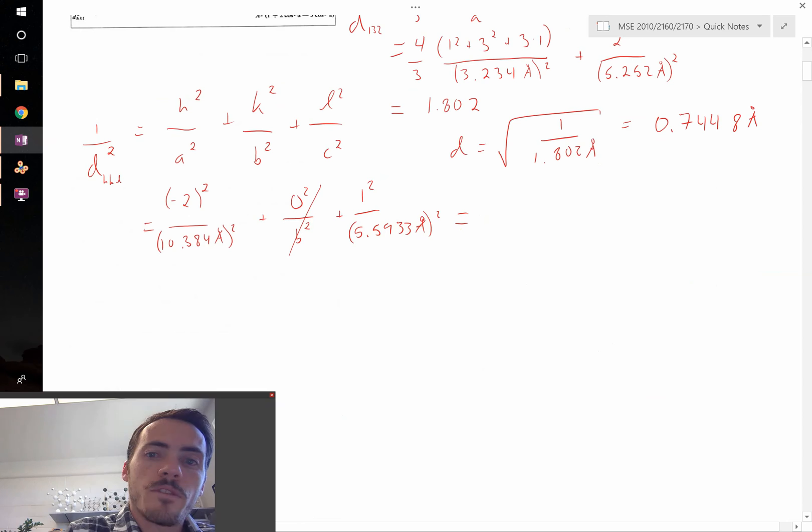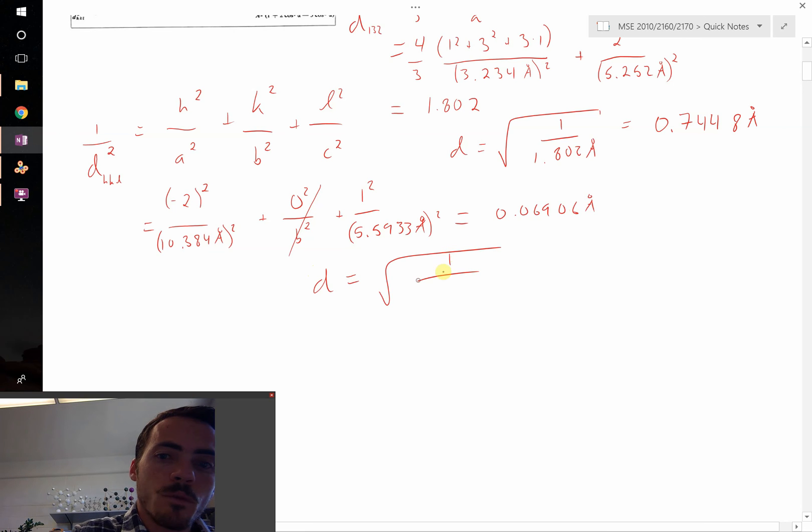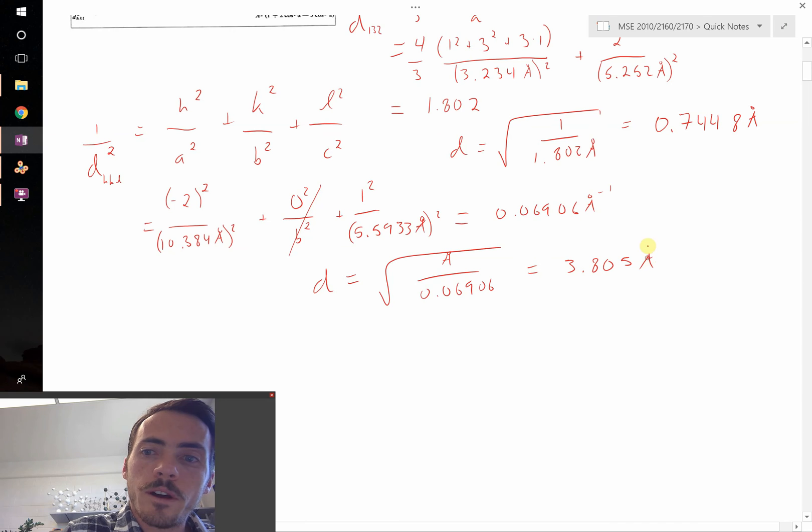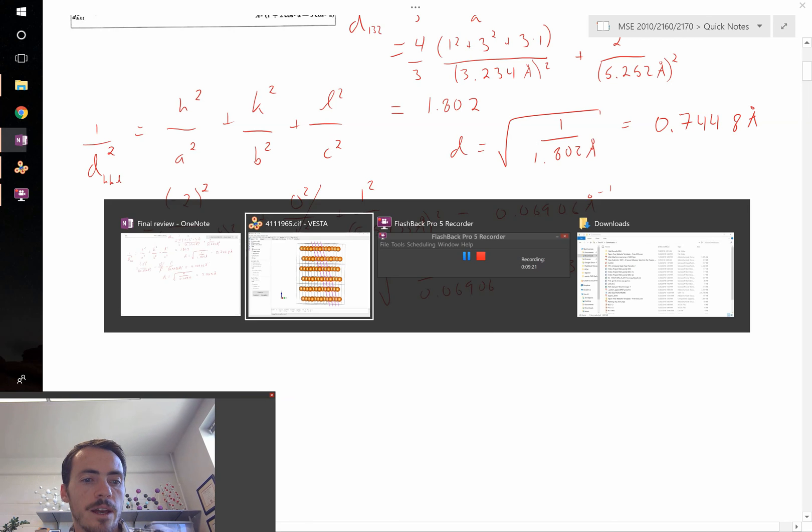When I punch all of that in, I find that it's equal to 0.06906 per angstrom. So when we solve for D, D will equal 1 over 0.06906, which gives us 3.805 angstroms.